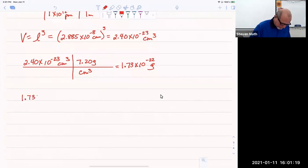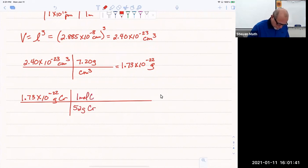So 1.73 times 10 to the negative 22nd. That's grams of chromium. Chromium has a molar mass of 52 grams per mole and one mole is 6.02 times 10 to the 23rd, positive 23rd atoms. If I crunch that out.